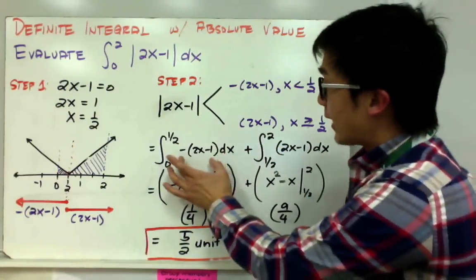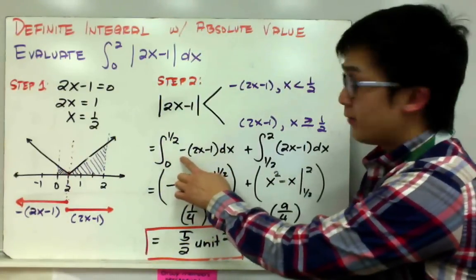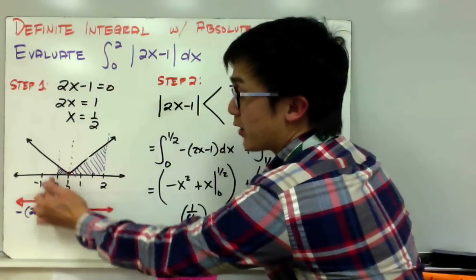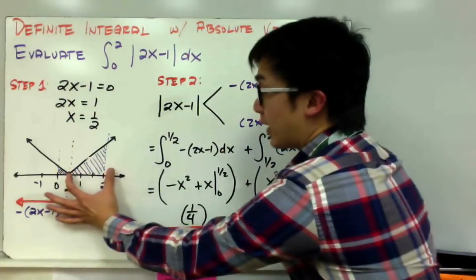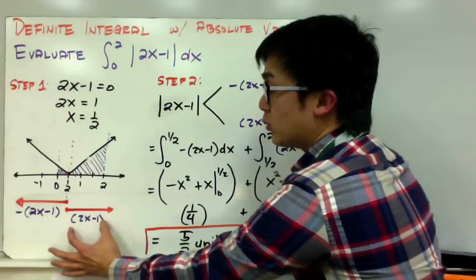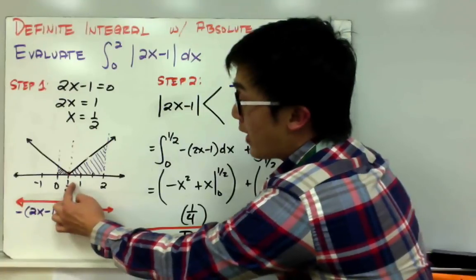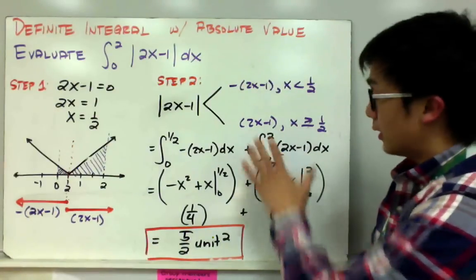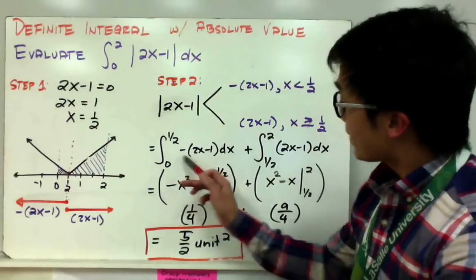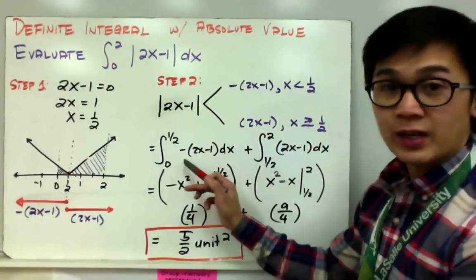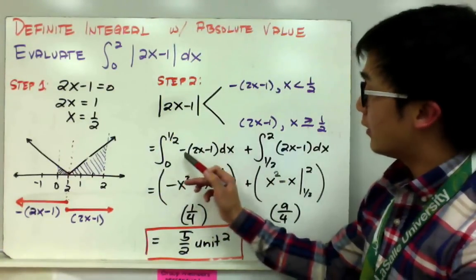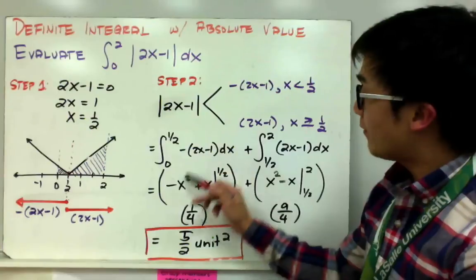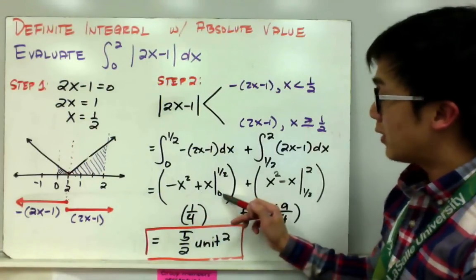My two integral notations will be: the negative of (2x minus 1) dx from 0 to 1/2, which is represented by the small area on the left; and for my second area, the definite integral of (2x minus 1) dx from 1/2 to 2. For the first integral, distribute the negative sign to get negative x squared plus x, evaluated from 0 to 1/2.